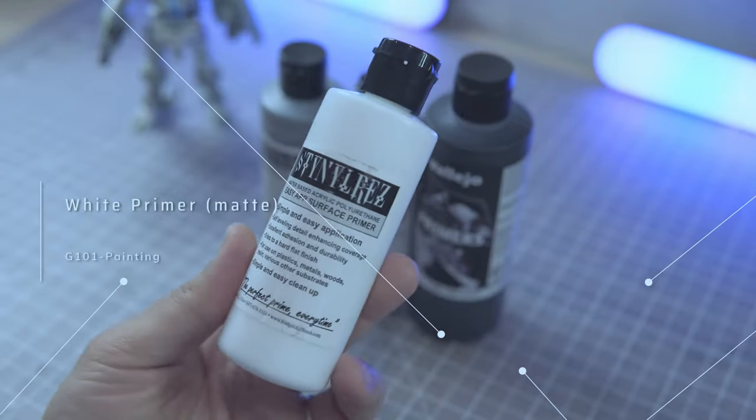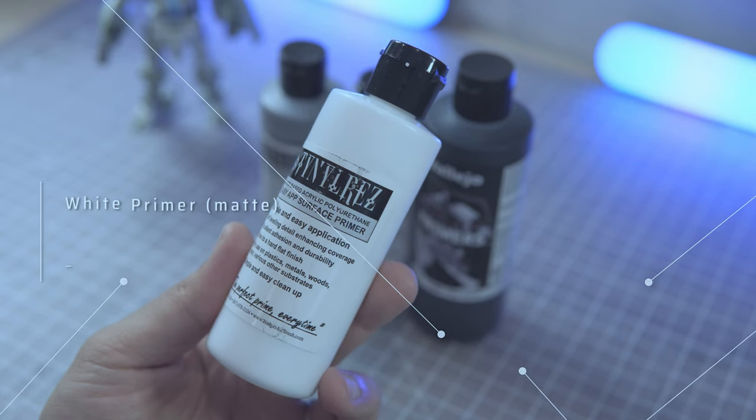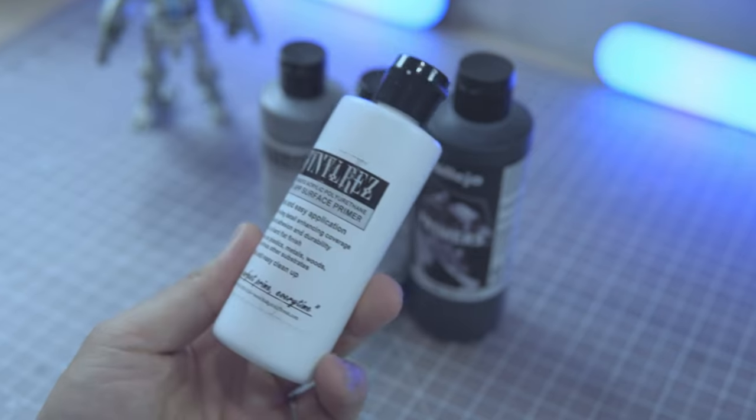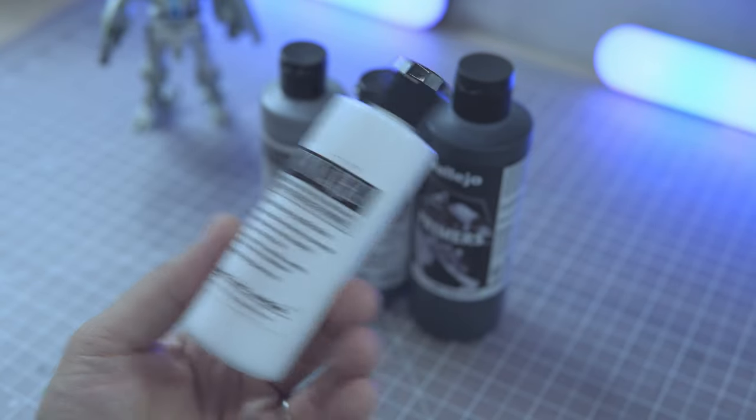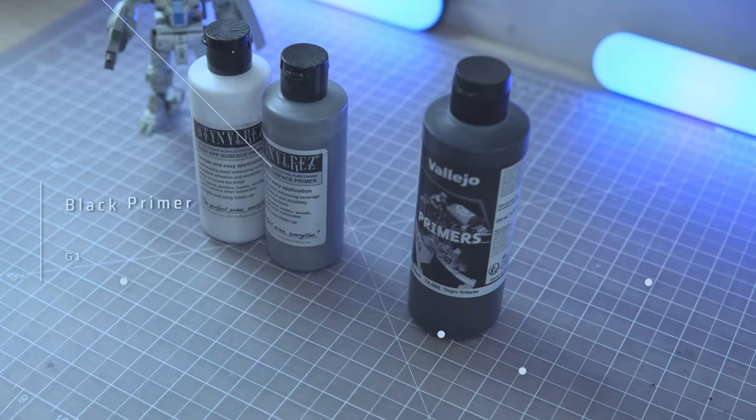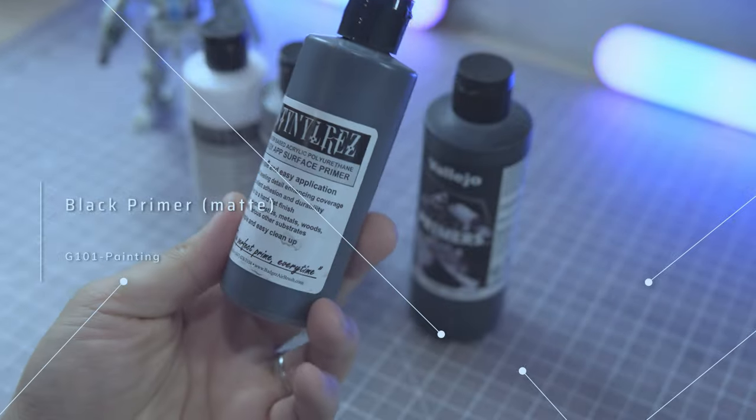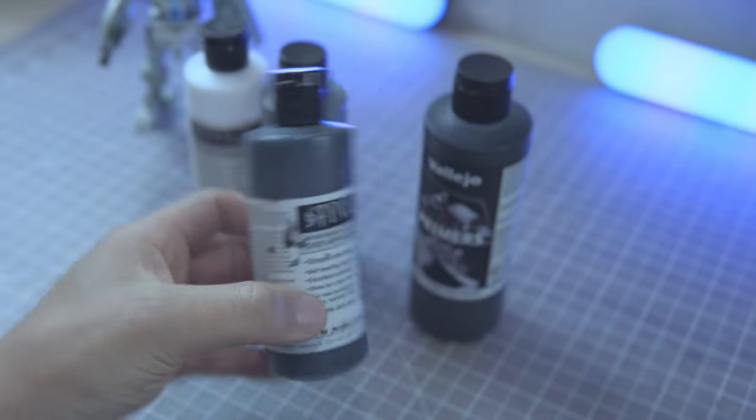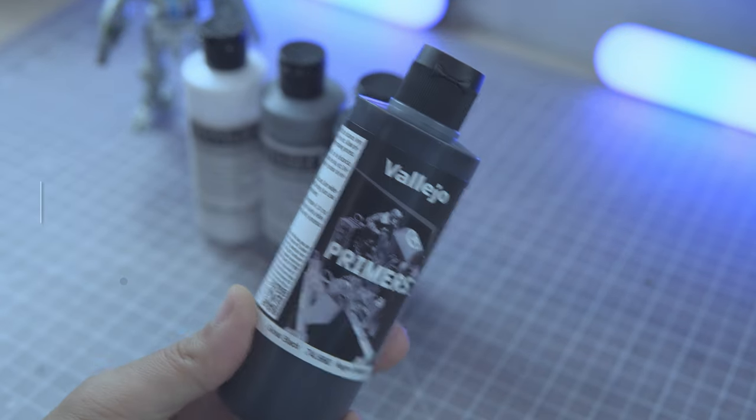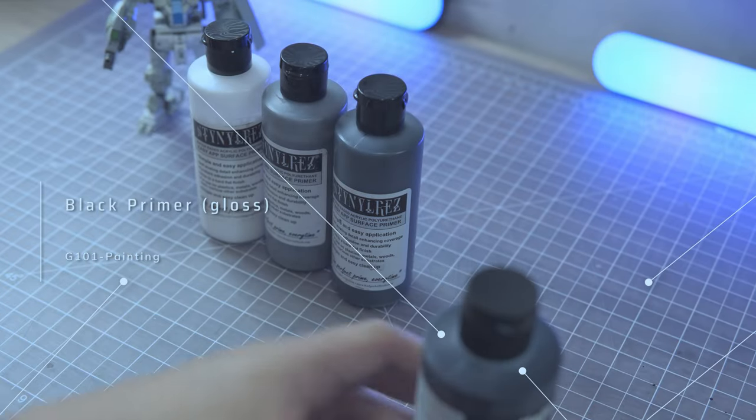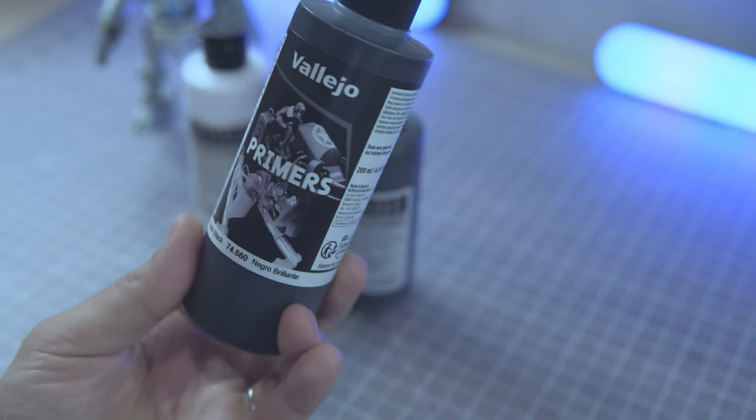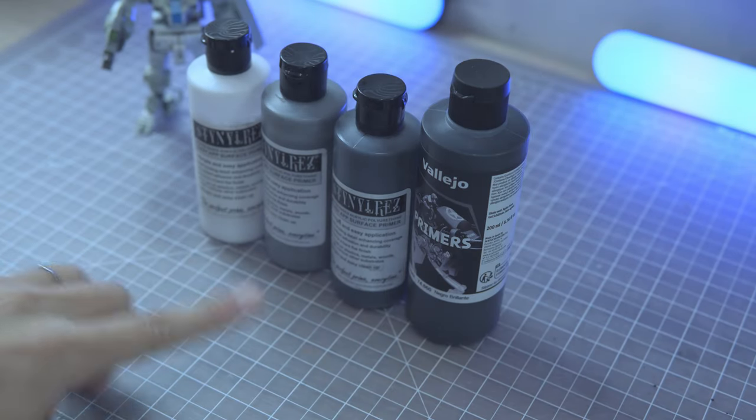The white primer. This one enhances brightness and vibrancy. It's perfect for lighter color such as like a pastel tone or the lighter blue lighter hue colors. And a black primer. It's best for of course dark customization. This one creates the depth and richness to color. And this black gloss. By the way, all these are matte. But this one's gloss finish. This one's tailored more towards the metallic color. And these are all water-based primer.